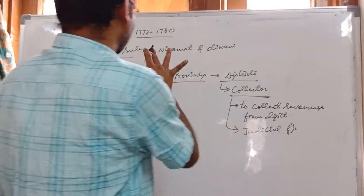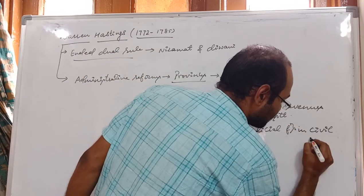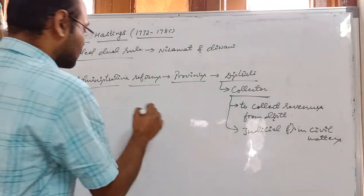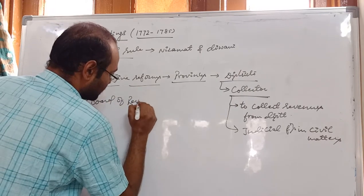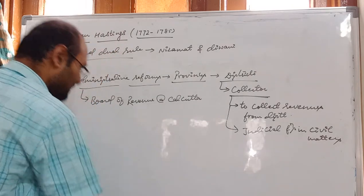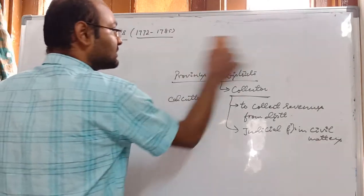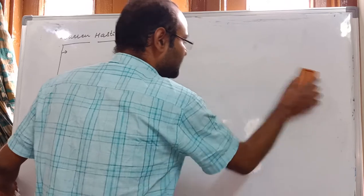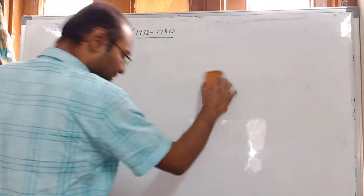In civil matters, the Collector presided over the District Diwani Adalat. Hastings also introduced a Board of Revenue at Calcutta to supervise the functioning of the Collectors. One basic need of the company was to ensure a smooth and regular flow of income, which could only come from land revenue — a permanent source that Clive had failed to devise any suitable system for.